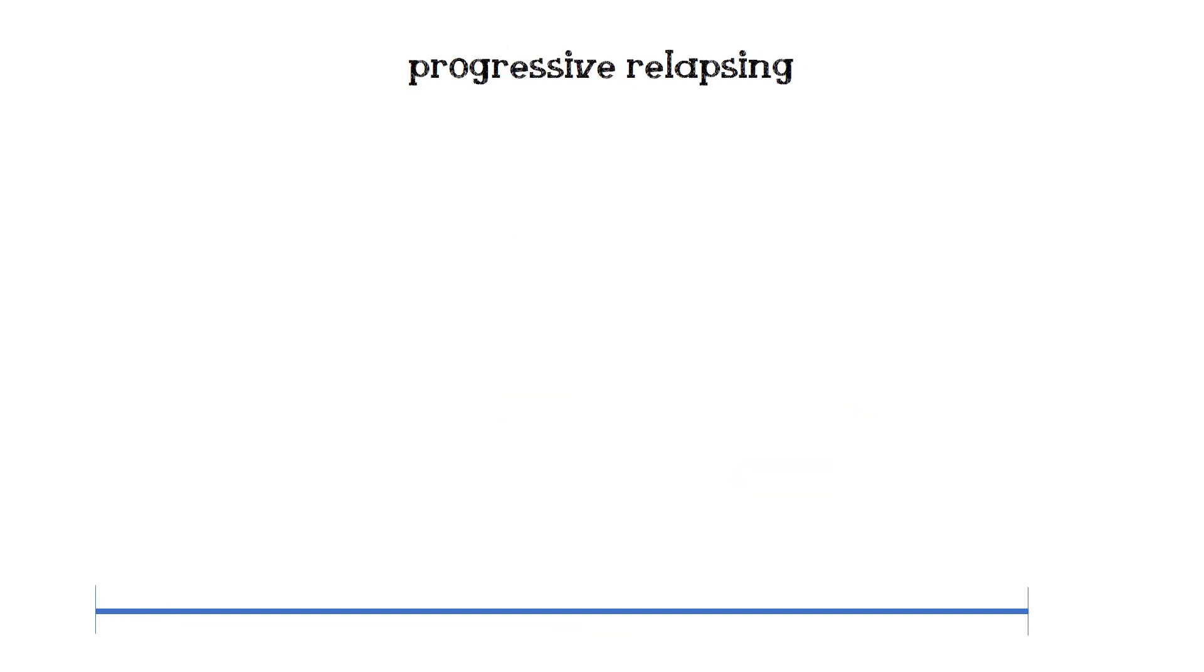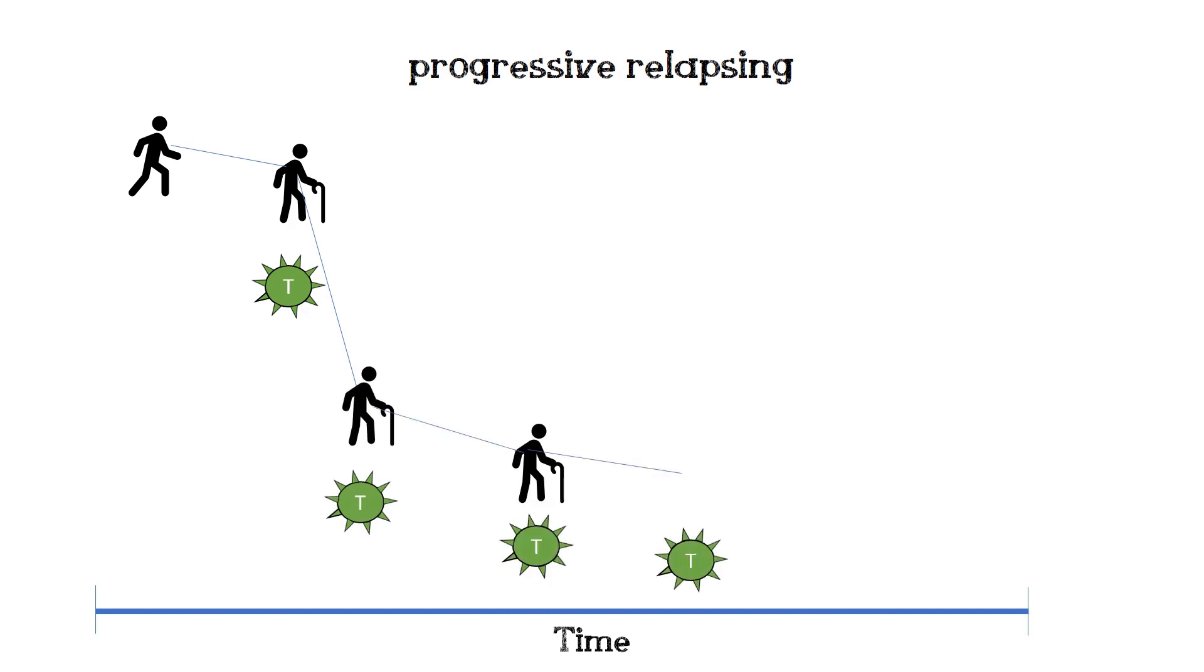Finally, progressive relapsing multiple sclerosis is a constant attack, like primary progressive, but with bouts of more severe attacks in between. This form of multiple sclerosis has a faster time course.